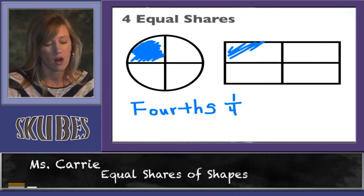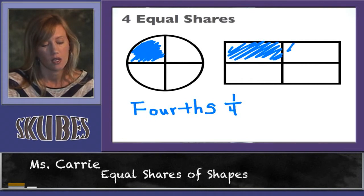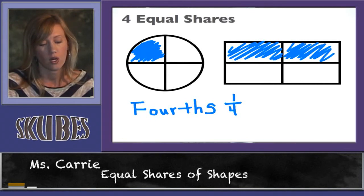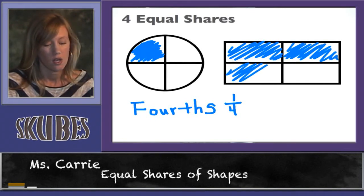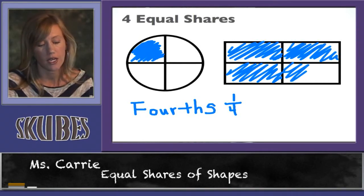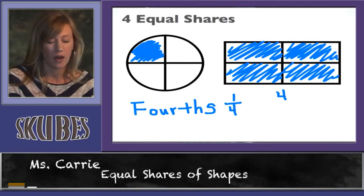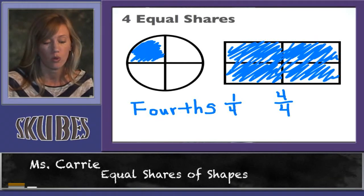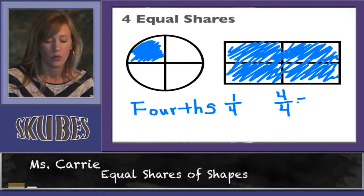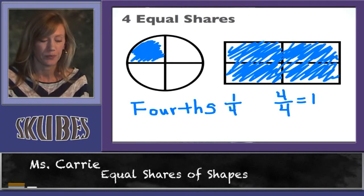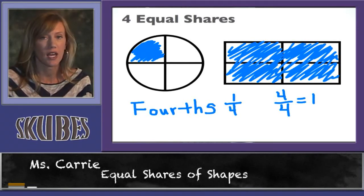Now let's color in all of these pieces. We're going to color in four parts of the four pieces that it was divided into. So our four would go on the top. Out of, we colored four out of the four. It's the same thing as the whole rectangle. Which is equal to one. That concludes our lesson today on equal shares.